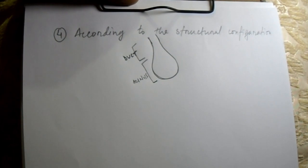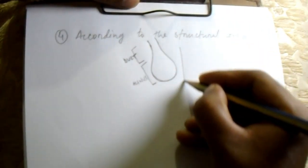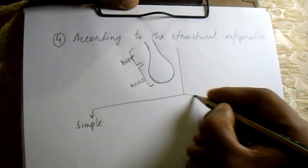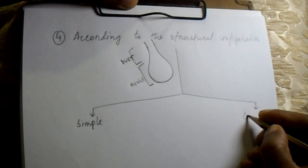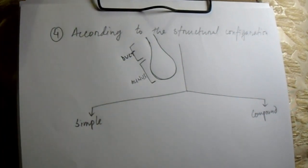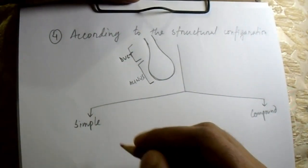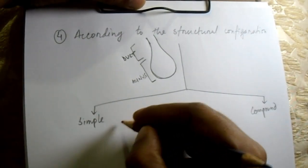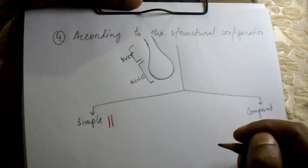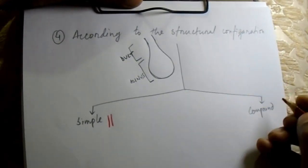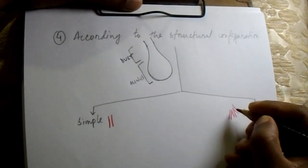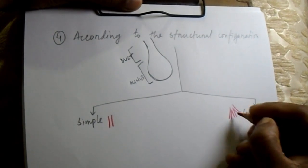According to structural configuration, exocrine glands are classified into two types: simple and compound. This classification depends on the branching of the duct. If no branching is present in the duct, it is termed simple. If branching is present in the duct, it is termed compound.